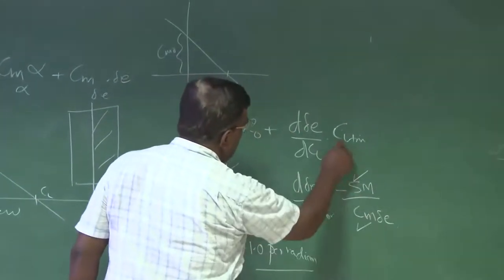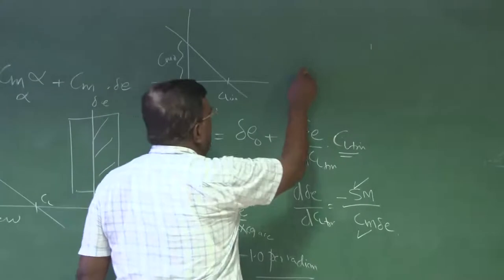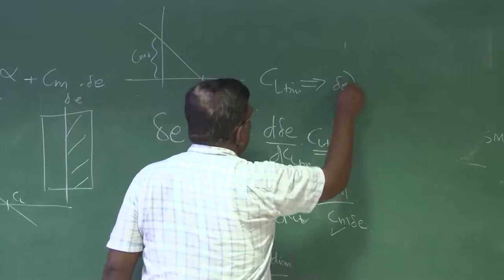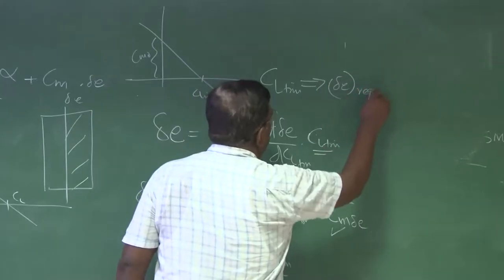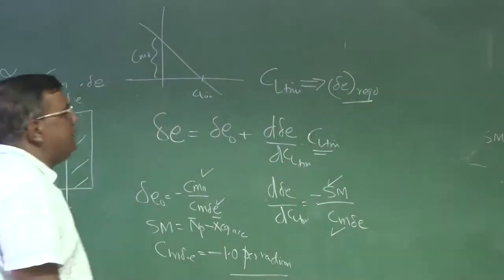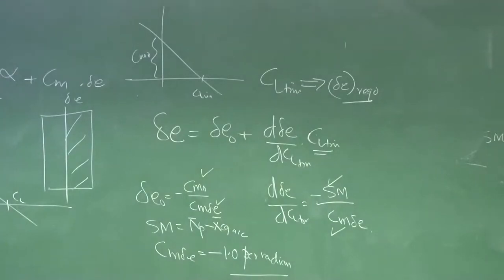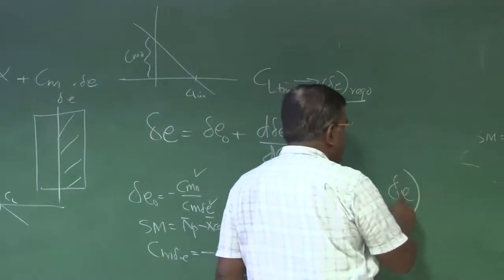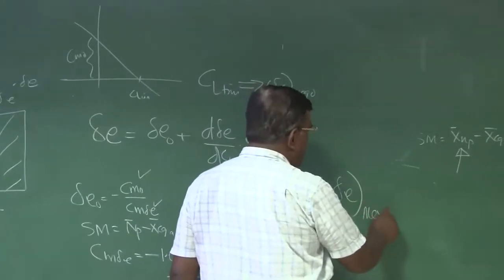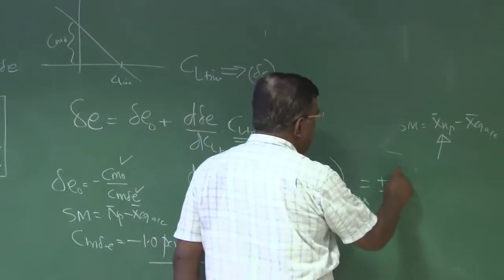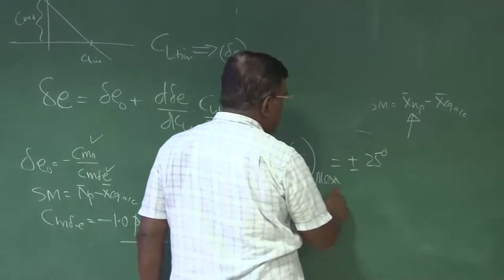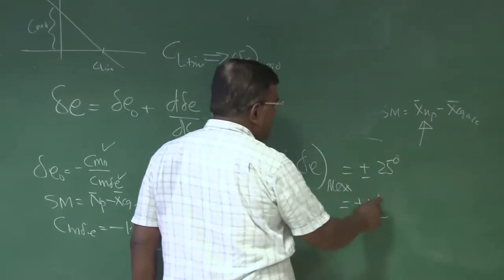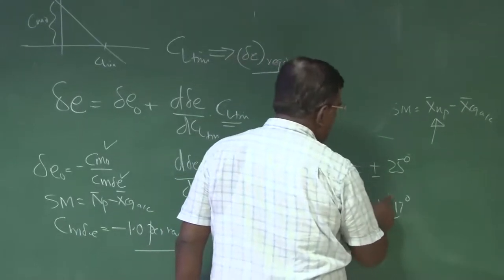Static margin you know, CM delta E. So you will get, for a given CL trim, what will be the delta E required? What you as a designer has to ensure that, if your delta E max, which is true for a conventional airplane, is equal to plus minus 25 degree. So as a designer, you use only plus minus 15 degrees, 15 to 17 degrees, not more than that.